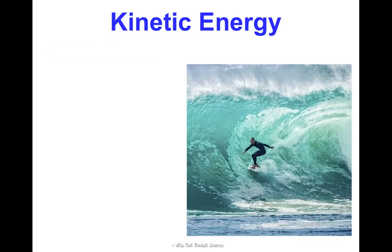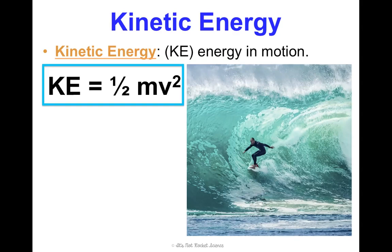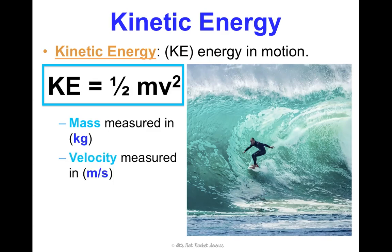Kinetic energy, or KE, is energy in motion. Any object that is moving has kinetic energy. We can calculate it: kinetic energy is one-half mass times velocity squared. Mass must always be measured in kilograms in this equation, and velocity must always be measured in meters per second.